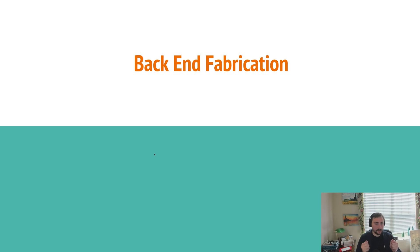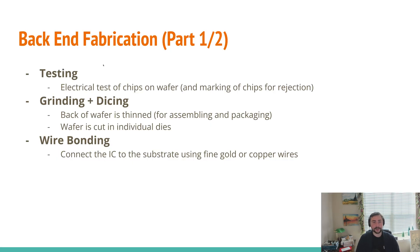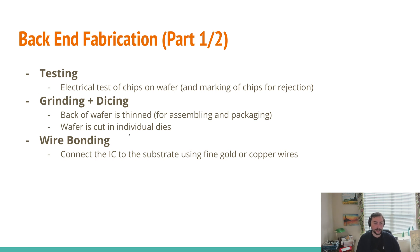The first thing we do is typically testing. We can electrically test our chips on our wafer, see which ones have problems, and mark them for rejection to filter them out early. After testing, we go into the grinding and dicing phase: we thin the back of the wafer so our final results are more amenable to packaging, and then we actually cut the wafer into our individual dies — the individual chips that we want to package.